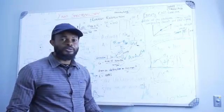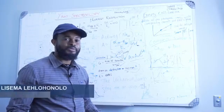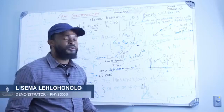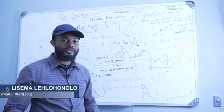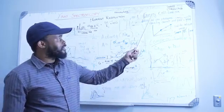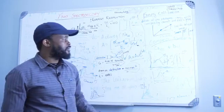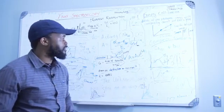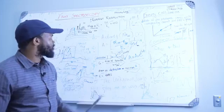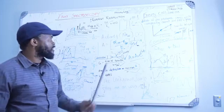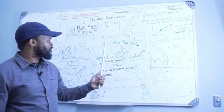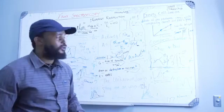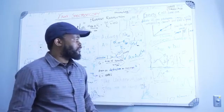Today, we are going to go through the gamma ray spectroscopy experiment. In this experiment, we have five sections: the first section is energy calibration, the second is Compton scattering, the third is energy resolution, the fourth is activity, and the fifth is determining the unknown source. For energy calibration, you are going to plot the spectrum of Caesium-137.